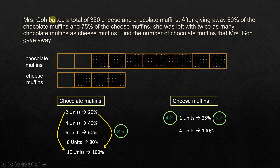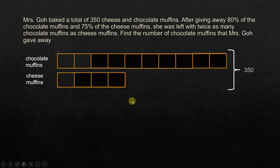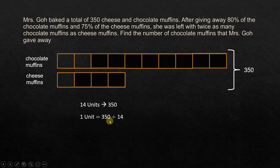So now this whole thing — the units given away plus the units left, for both chocolate and cheese muffins — equals the initial total of 350, because she baked a total of 350 cheese and chocolate muffins together. So we know the total is 350, and 10 plus 4 gives 14 units. So 14 units represents 350, which means 1 unit equals 350 divided by 14.